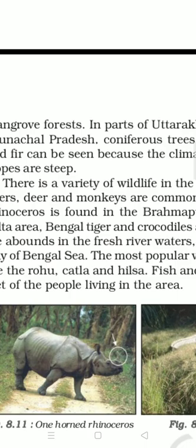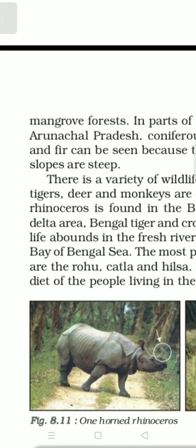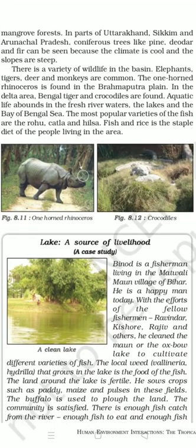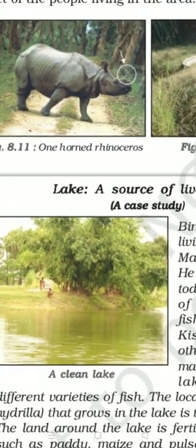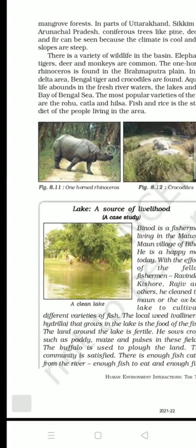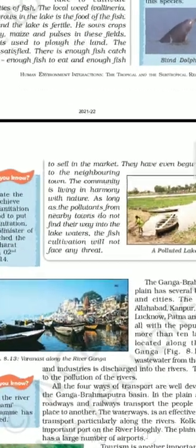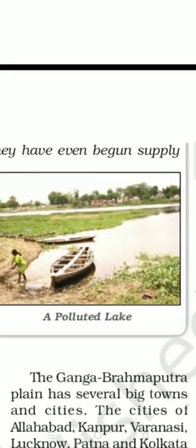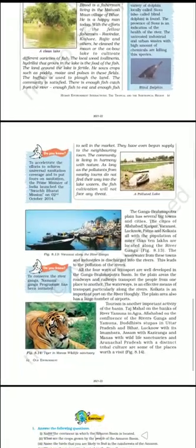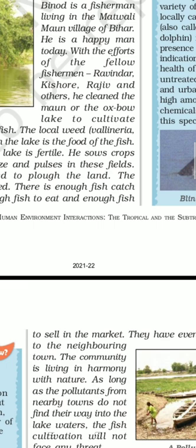You also find animals like Bengal tigers, crocodiles, monkeys, deer, and rhinoceroses in this basin. Looking at the images — see how beautiful a clean lake looks — but now, because of human beings, the lakes have become polluted. Before they were so clean, but now they are full of pollution. We should try not to pollute things. Both these basins are also tourist destinations and have ox-bow lakes.